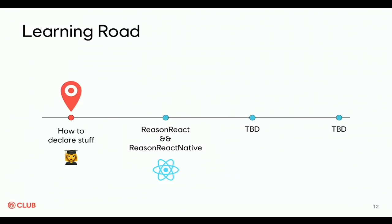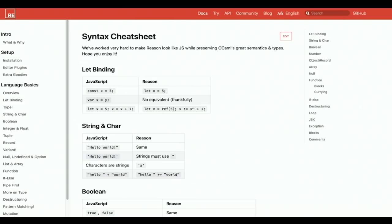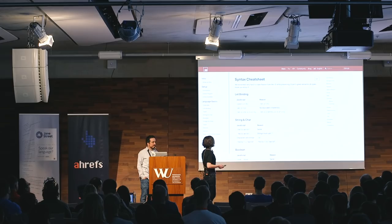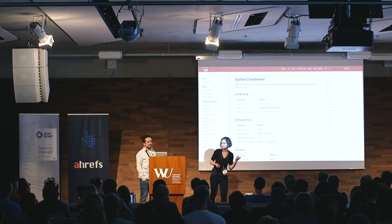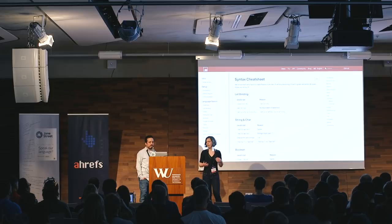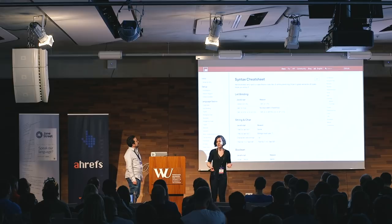The first step was to know how to declare stuff — by that I mean know the types that I could use. I went to the Reason website to understand what types exist and that kind of stuff. What really pleased me was the cheat sheet that shows all the similarities and differences between JavaScript and Reason. It was very reassuring because you find a lot of similarities in the end. So quickly I was able to declare stuff.